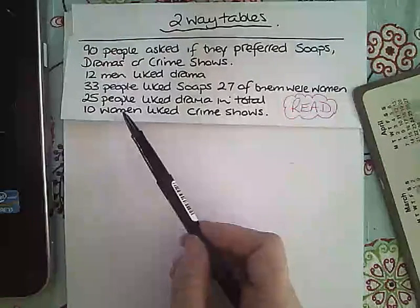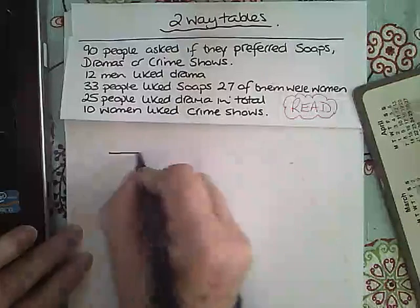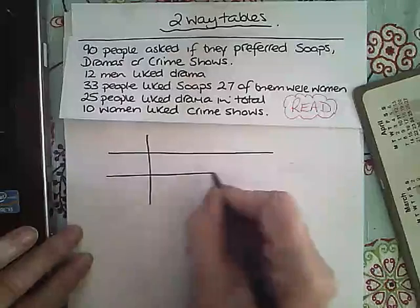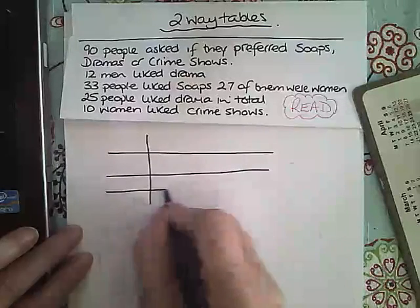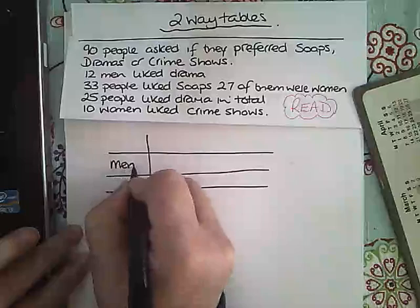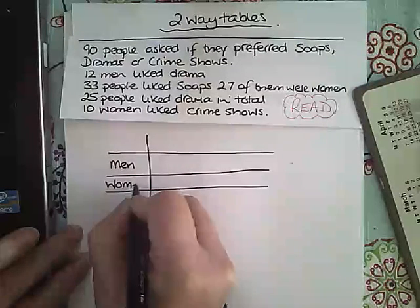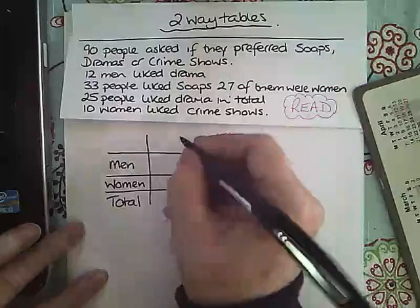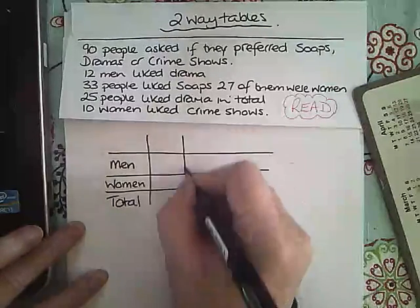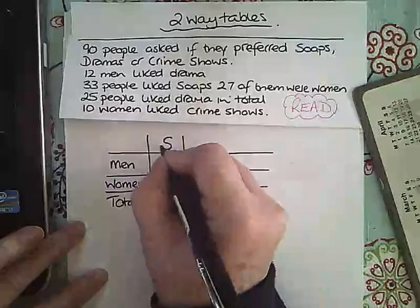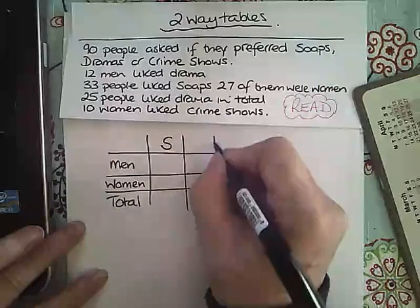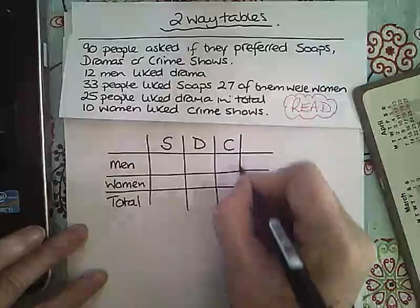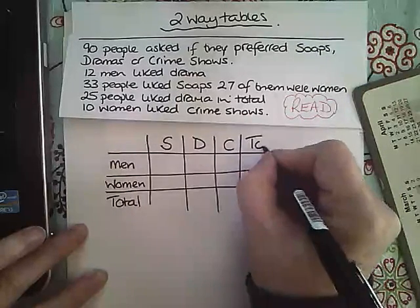When I draw my two-way table, I'm going to start it off by putting men, women, and a totals column, and then soaps with an S, dramas with a D, and C for crime, and then total as my final column.